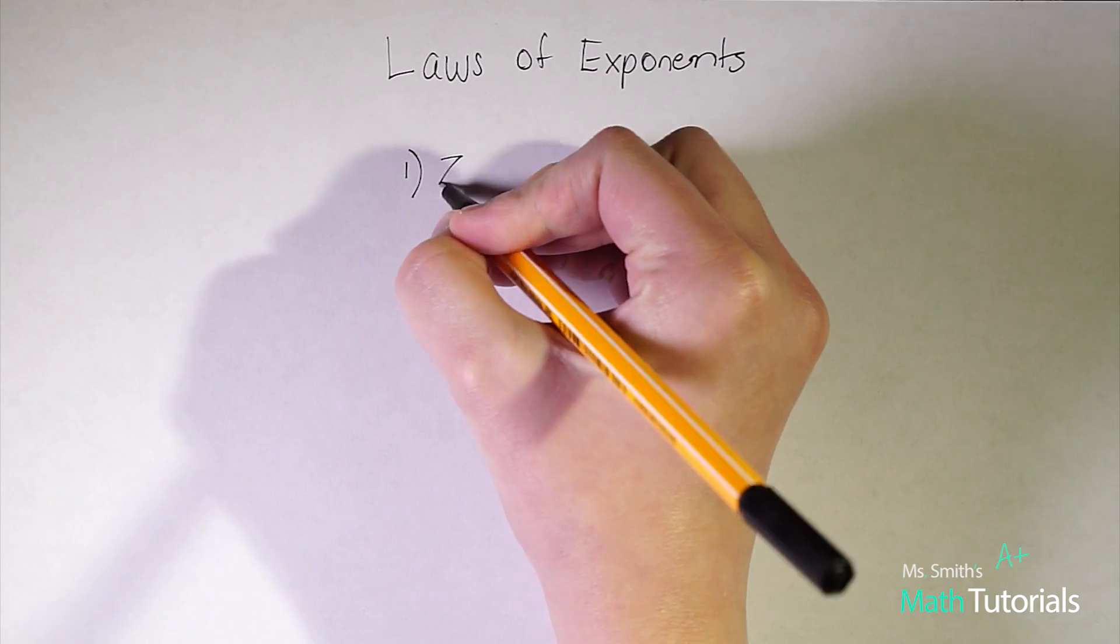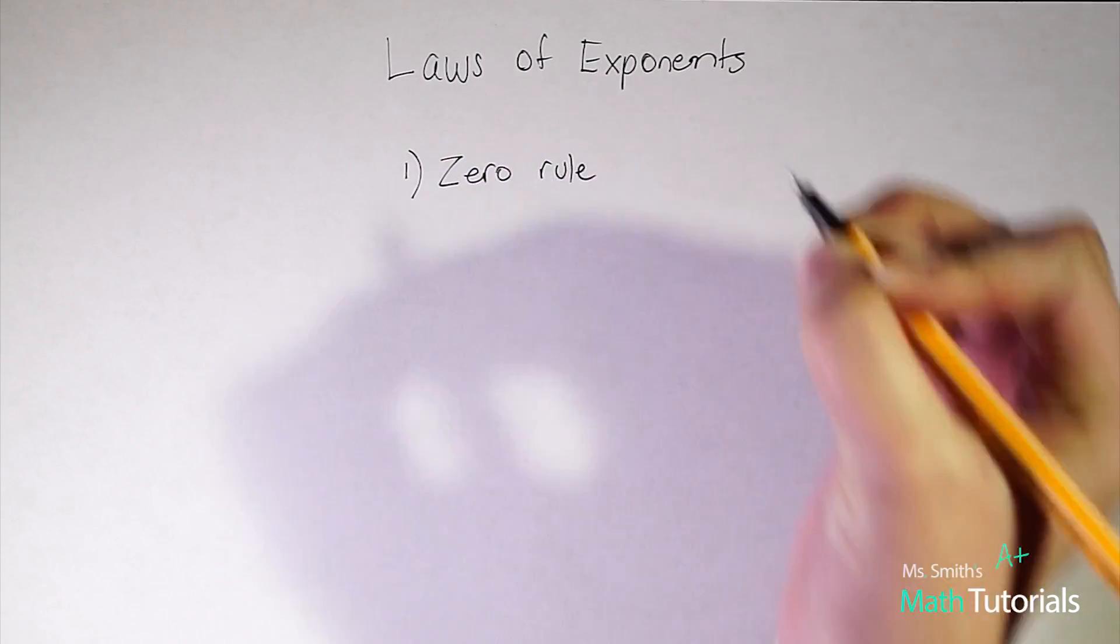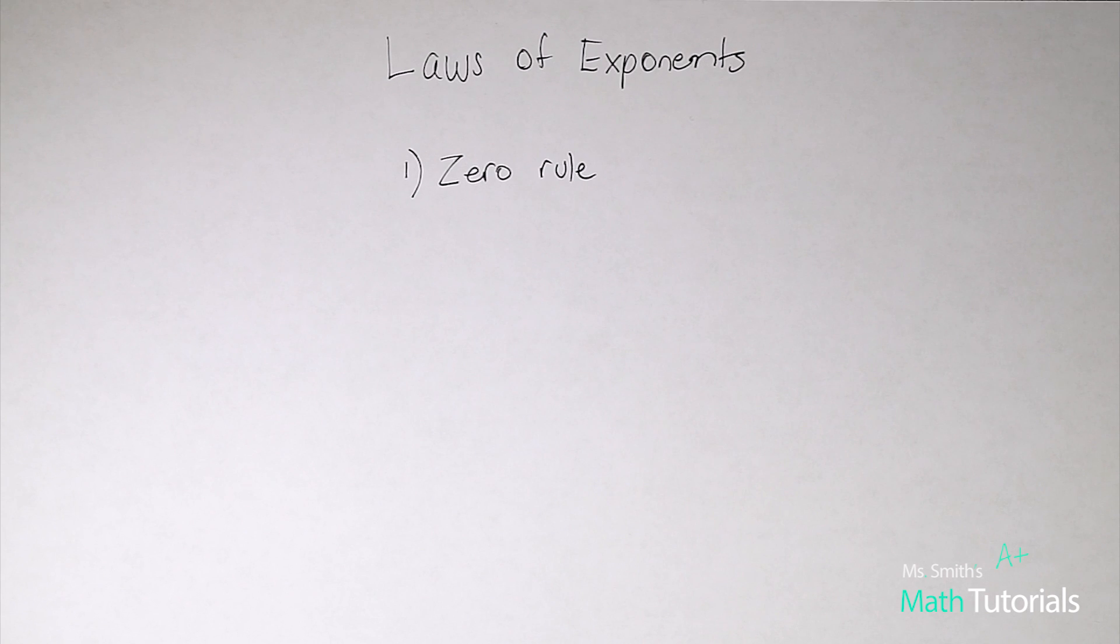The first one we're going to talk about is the zero rule. It's also the easiest, in my opinion, the easiest to remember.